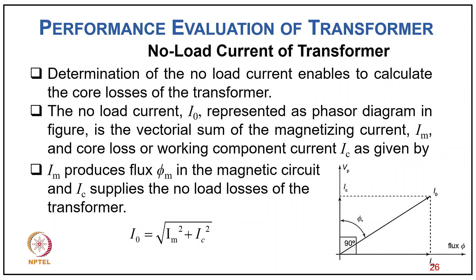Moving to the no-load current of the transformer: treatment of the no-load current enables calculation of core losses. The no-load current I₀ is the phasor sum of the magnetizing current Im and the core loss component Ic. Im produces flux φm in the magnetic circuit, and Ic supplies the no-load losses. In the phasor diagram, Ic is in phase with Vp (core loss component) and Im is perpendicular to Vp (in phase with flux φm).